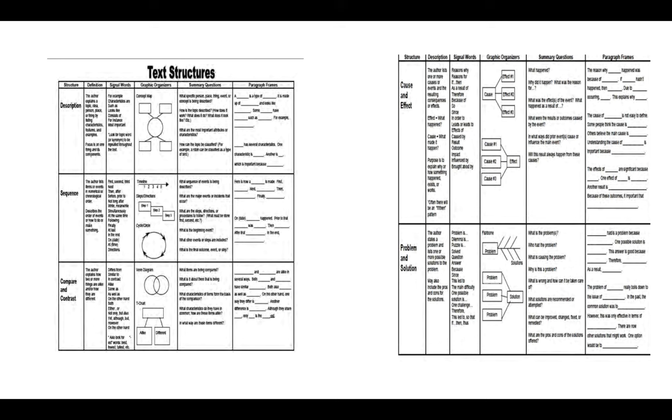There are some summary questions that you can embed within your close reading lesson. As well as paragraph frames that will help kids as they translate the text structures to their own writing. You can get them started with their own writing using these paragraph frames.